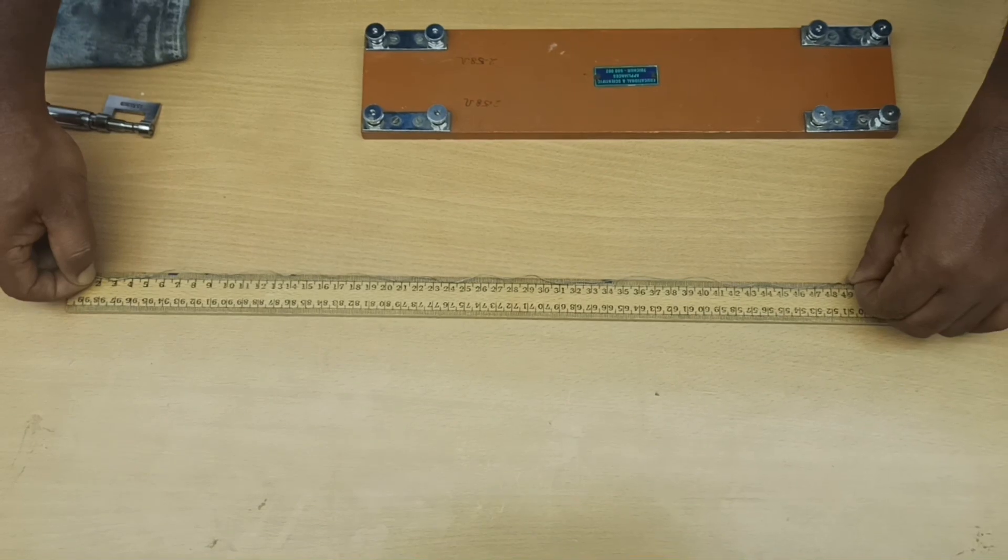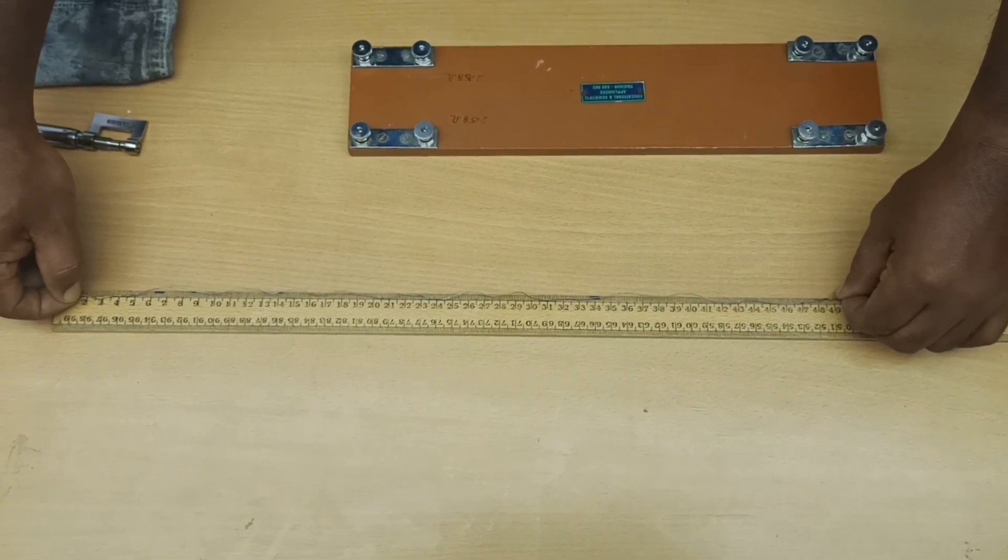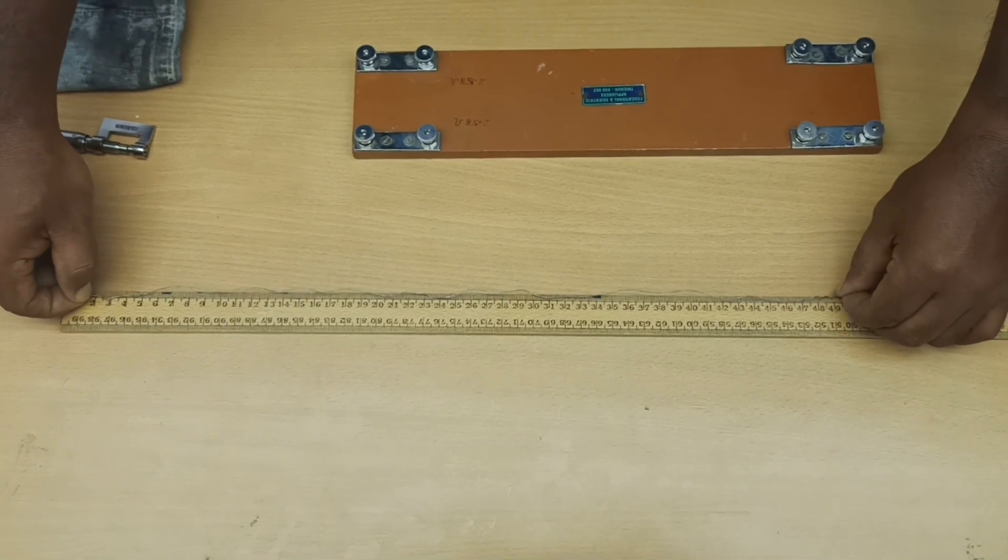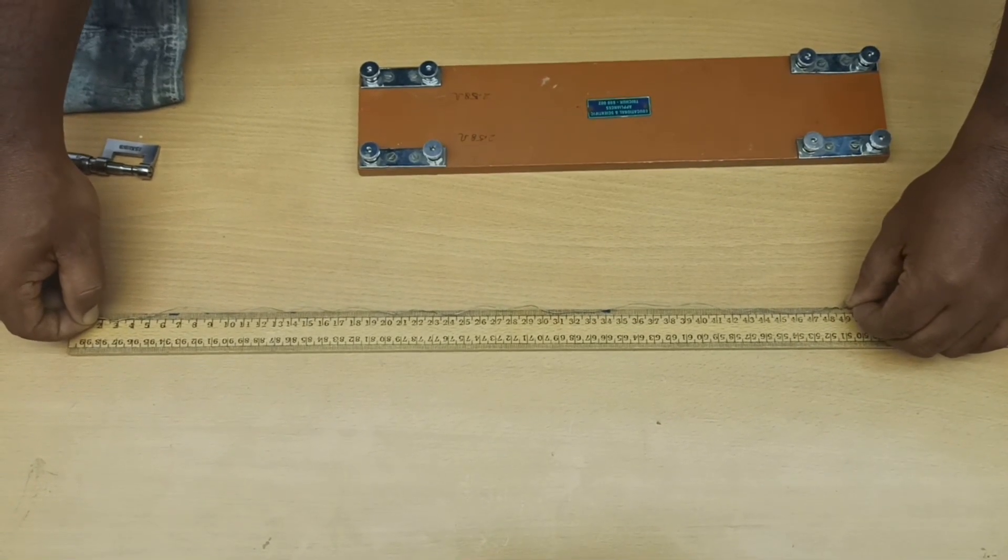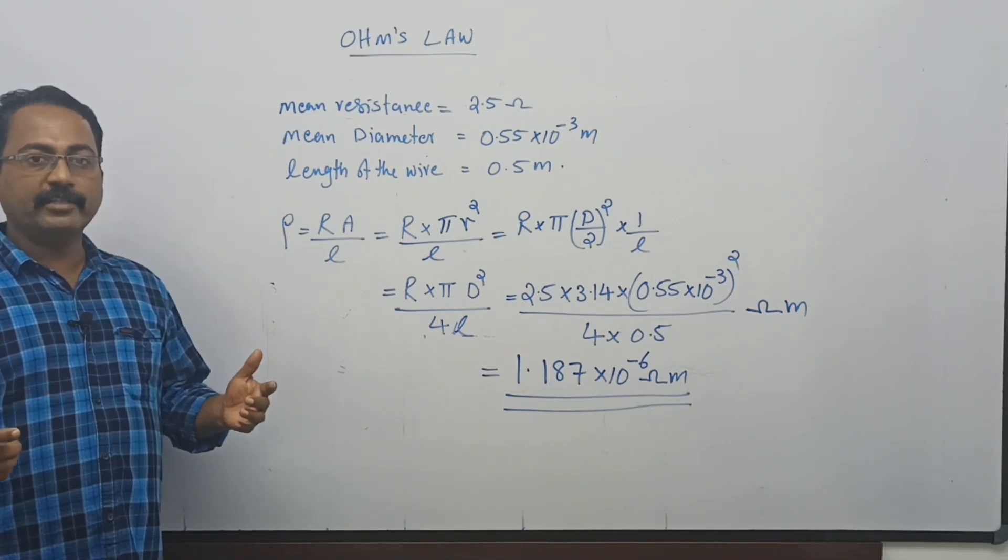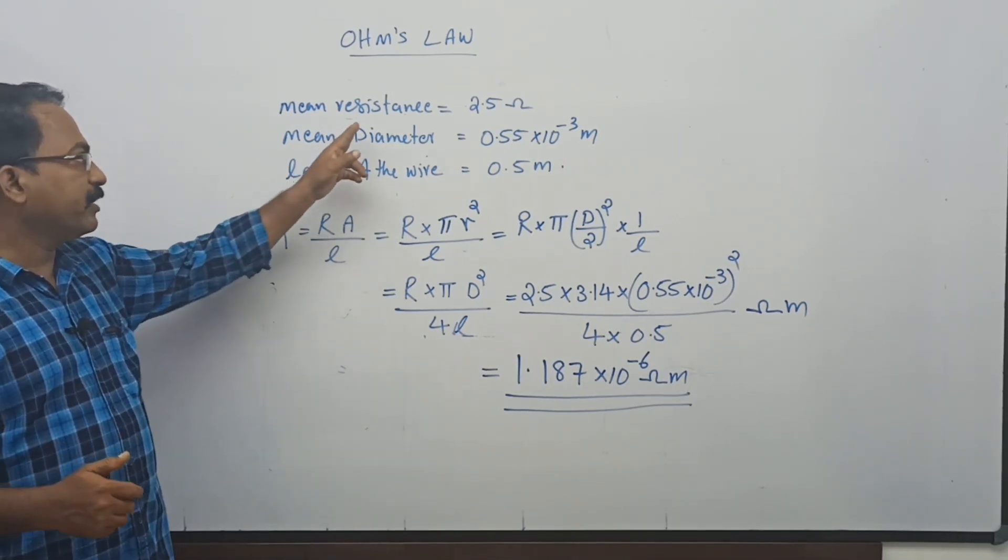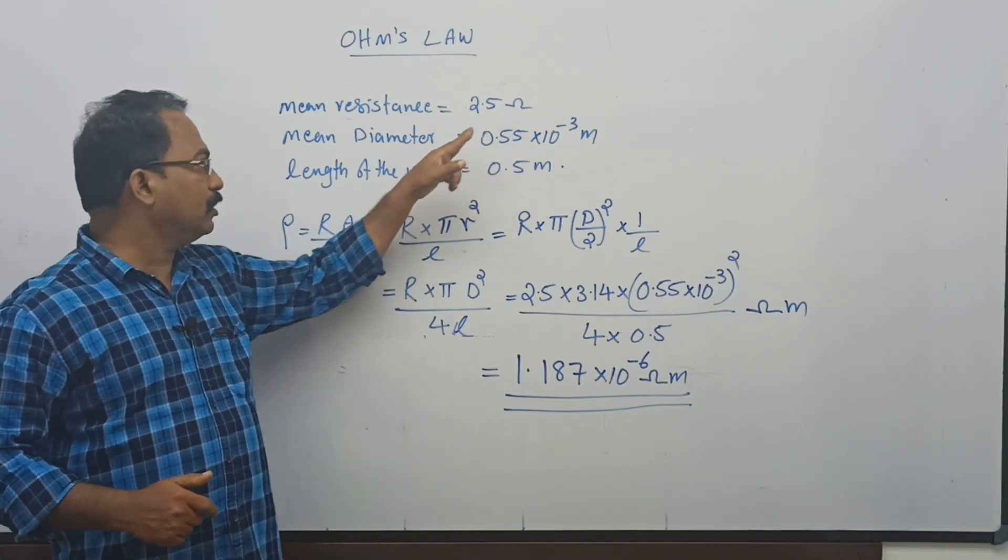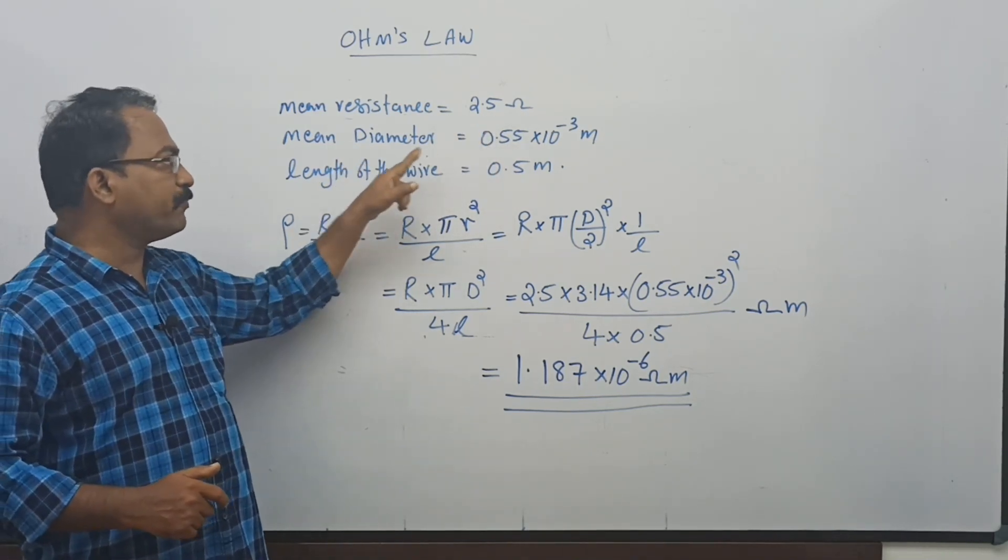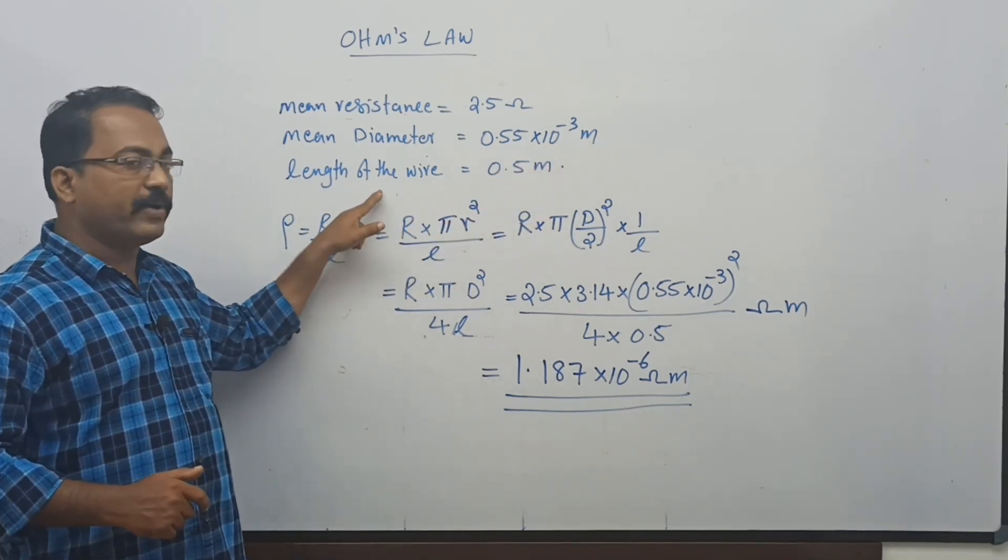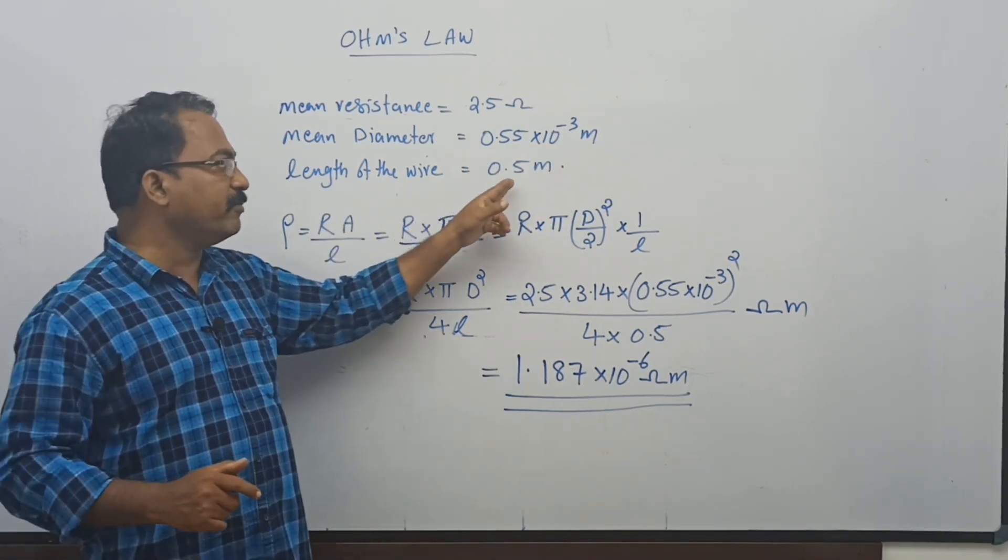Now we are taking the length of the resistance wire using a meter scale. We got it as 50 centimeter, that is 0.5 meter. Now we are calculating the resistivity of the material using the data. The mean resistance is 2.5 ohm. The mean diameter of the wire is 0.55 × 10^-3 meter. The length of the wire is 0.5 meter.